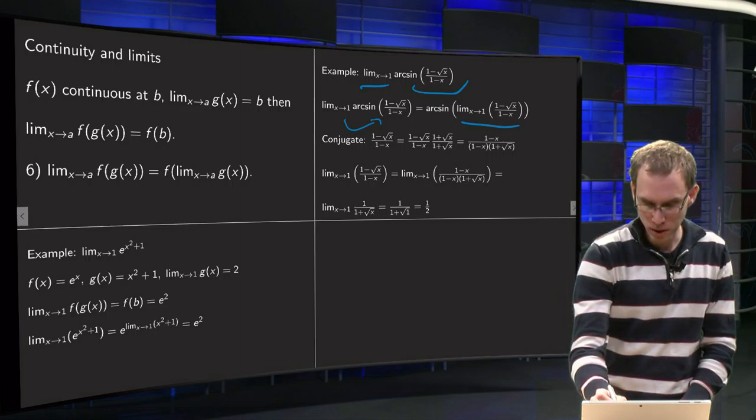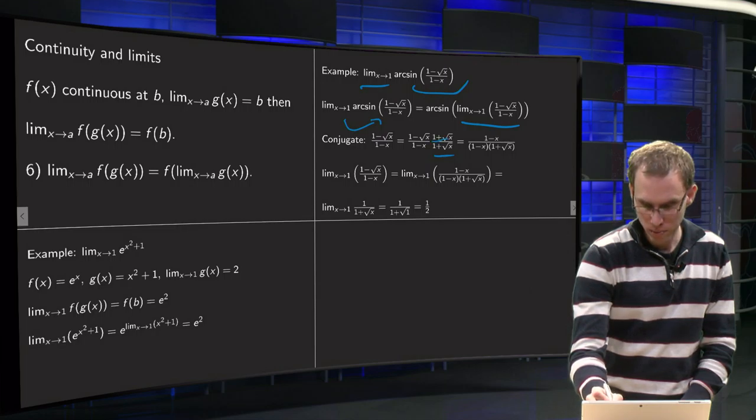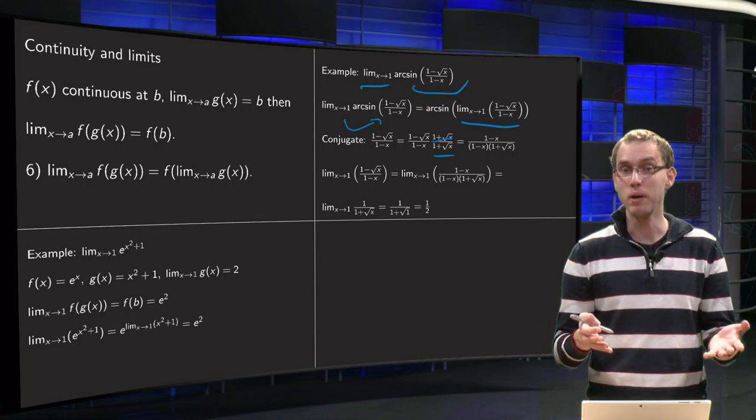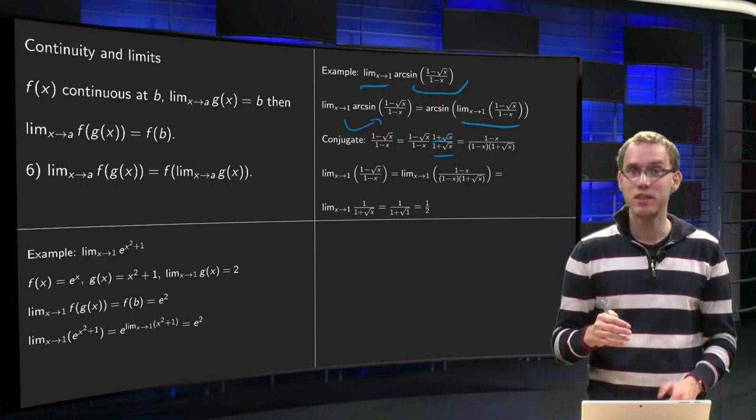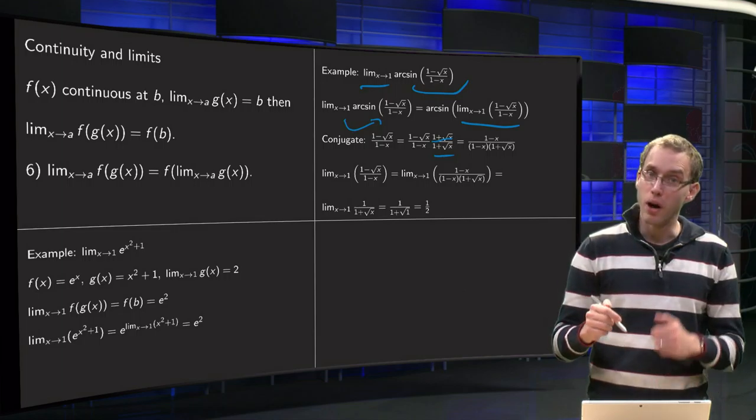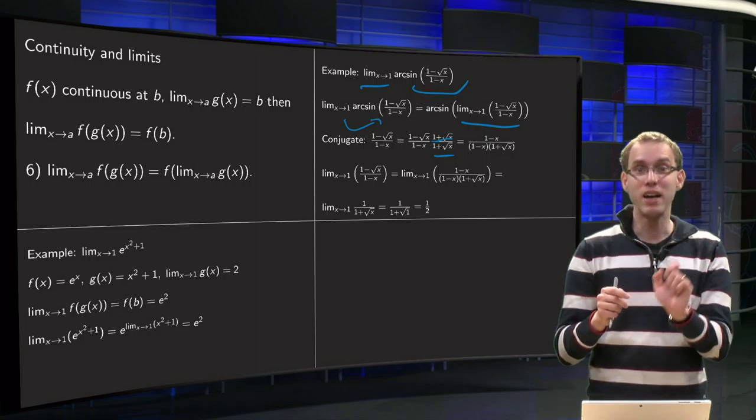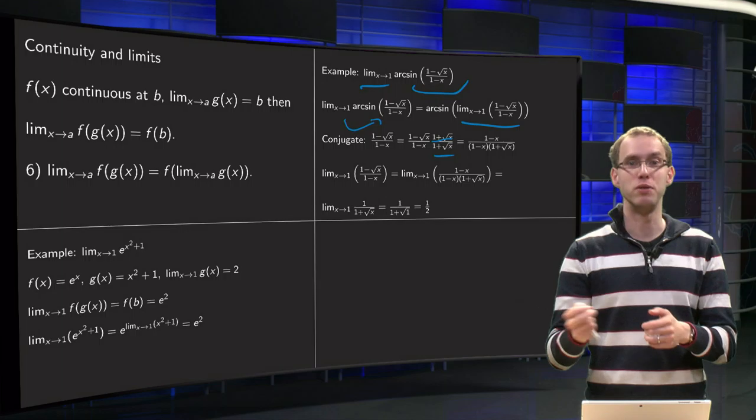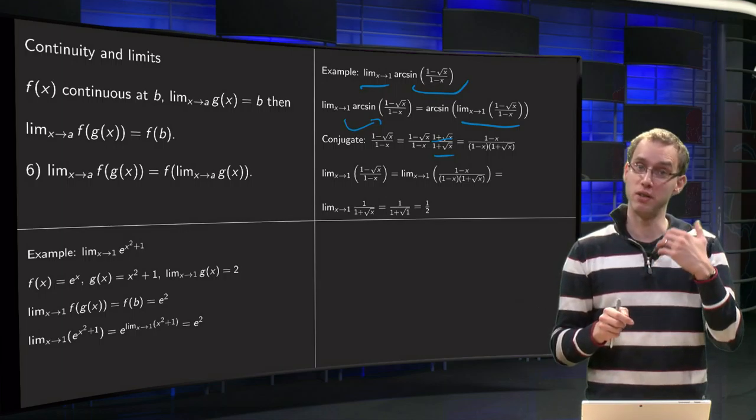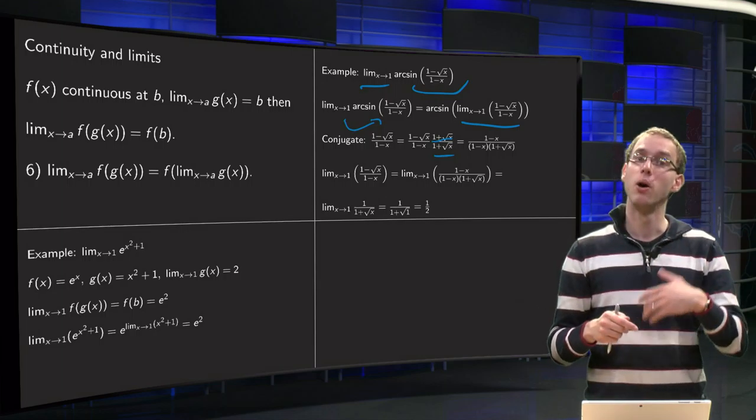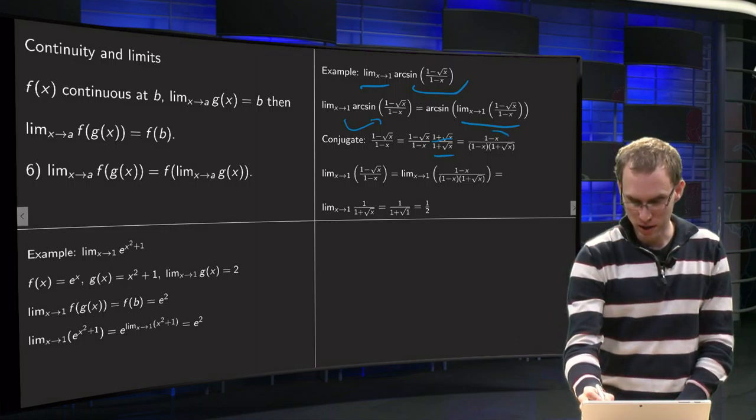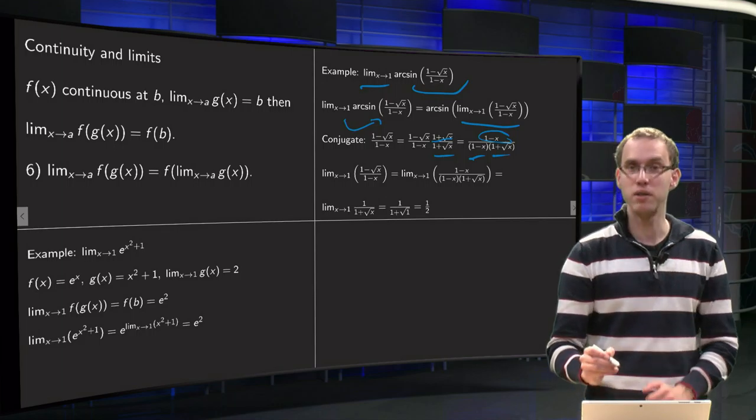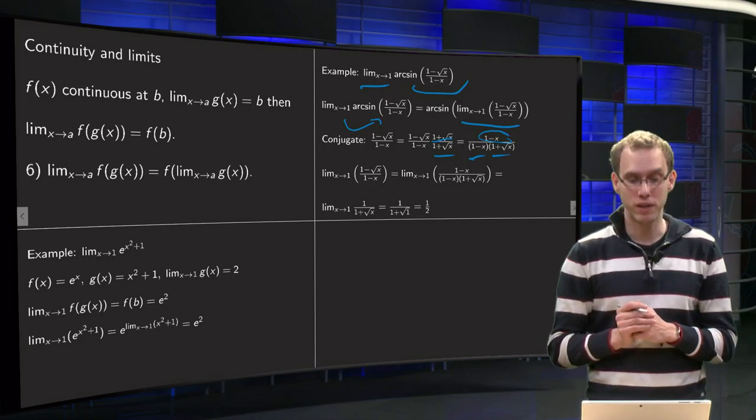We multiply by 1, by (1 plus square root of x) over (1 plus square root of x), that equals 1. And why do we do that? Well, then in our numerator we get (1 minus square root of x) times (1 plus square root of x), so that is of the form (a minus b) times (a plus b), so that equals a squared minus b squared, or in this case 1 minus x. So we get 1 minus x in our numerator, we just copy the denominator: (1 minus x) times (1 plus square root of x).